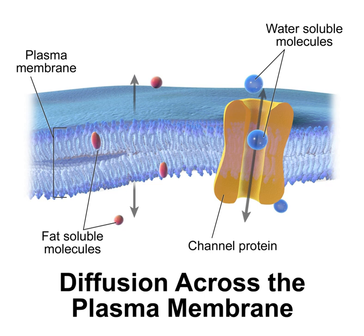The cell membrane, also known as the plasma membrane or cytoplasmic membrane, and historically referred to as the plasmolemma, is a biological membrane that separates the interior of all cells from the outside environment, protecting the cell from its environment, consisting of a lipid bilayer with embedded proteins.